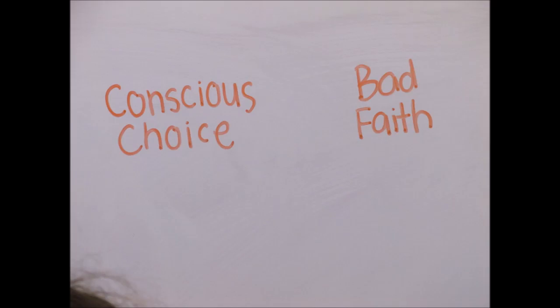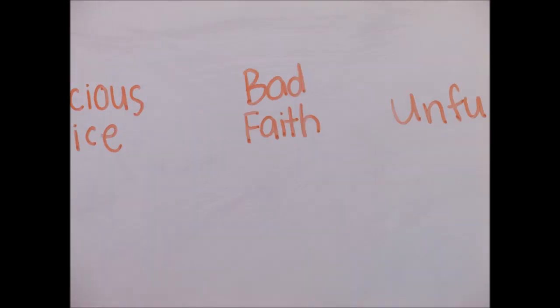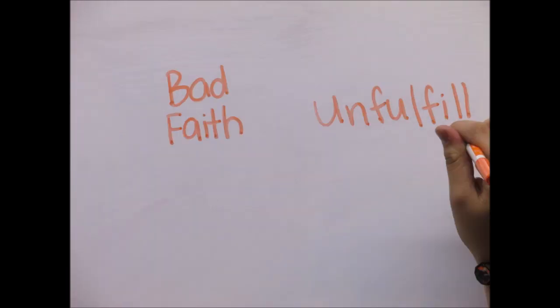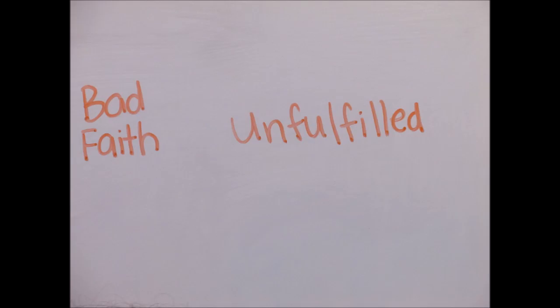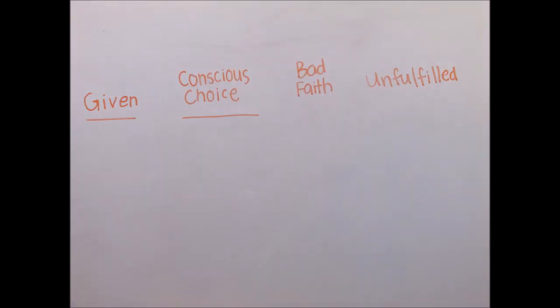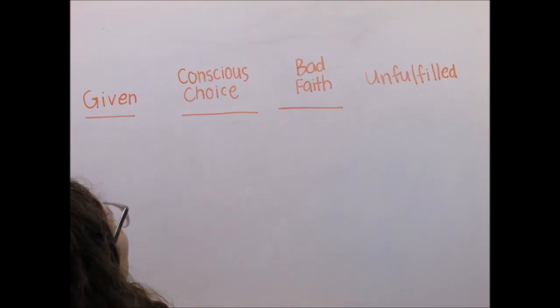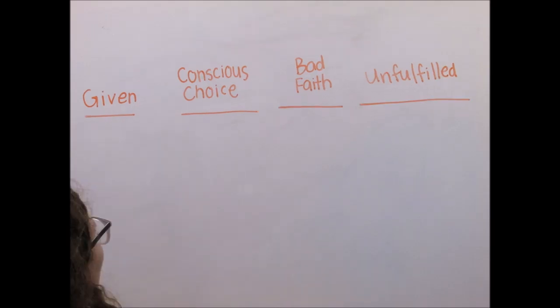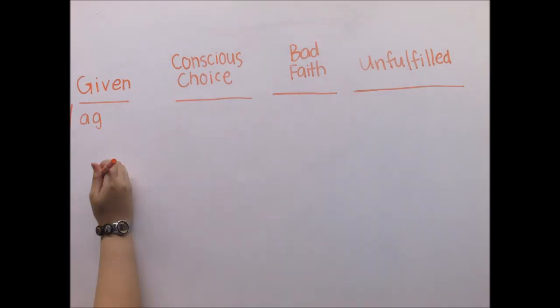This idea can be broken down into a simple chart. In order for inauthenticity and bad faith to occur, Blanche has to be fully aware that she's making the choice to deceive herself and realize that she can change her situation but chooses not to. Ultimately, this bad faith and inauthenticity will lead to her unfulfillment.